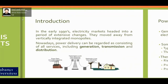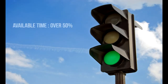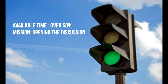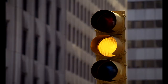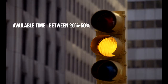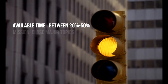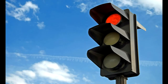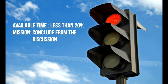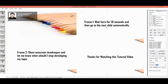Unscreen Stopwatch has three different phases: green, yellow, and red. The green phase is when you have more than 50% of the assigned time remaining. During the green phase, you can open your discussion and start your topic by asking a question or defining a new concept. However, between 20% and 50%, the Unscreen Stopwatch turns yellow, which means you need to finish the major parts of your discussion. Finally, in the red phase, you have less than 20% of assigned time remaining, and a conclusion seems necessary.